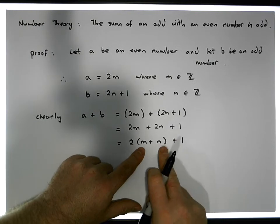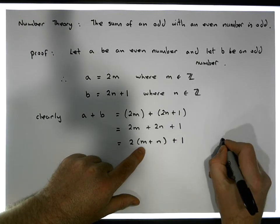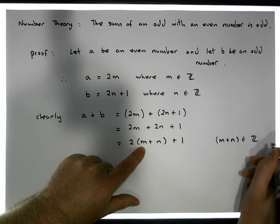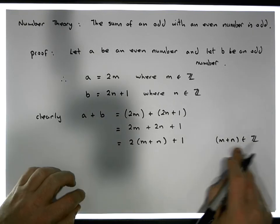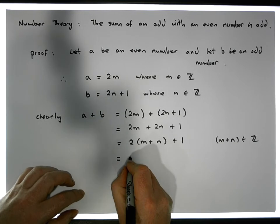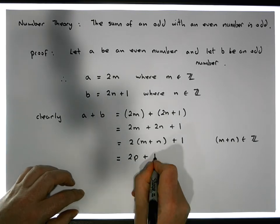Now M and N are integers, so then that means that M plus N is an element of the integers, it is an integer as well. So let that integer be P. So what we end up with here is that A plus B must be equal to two times P plus one.